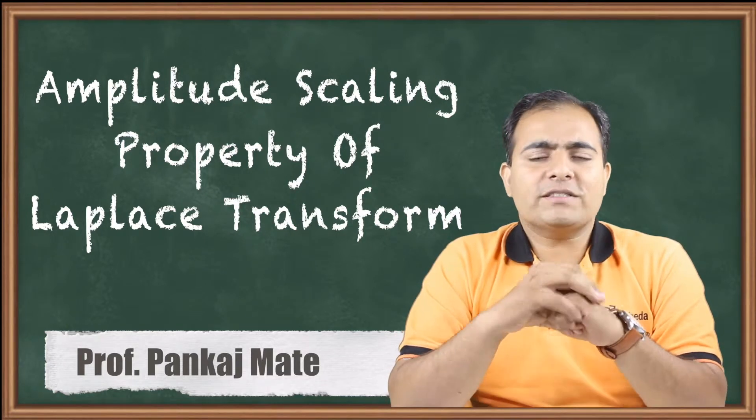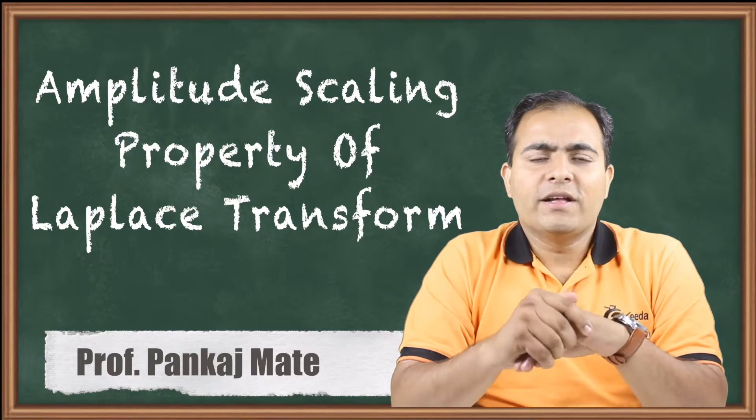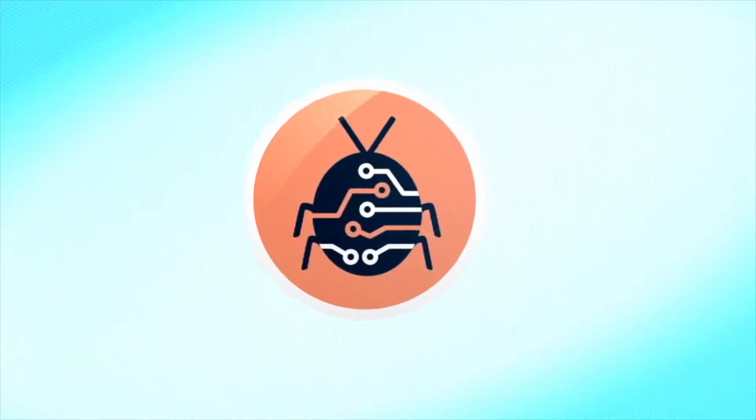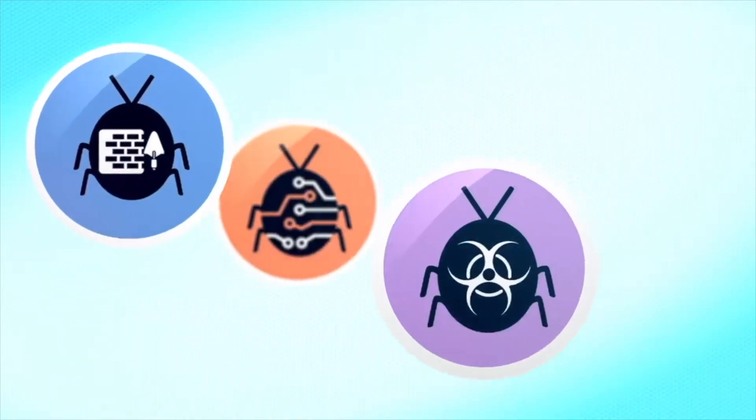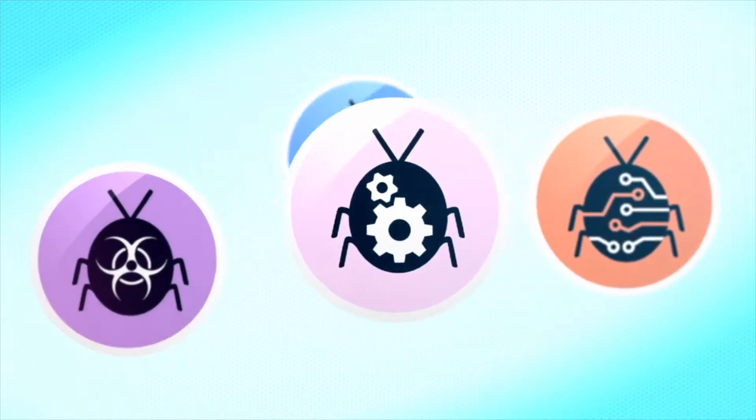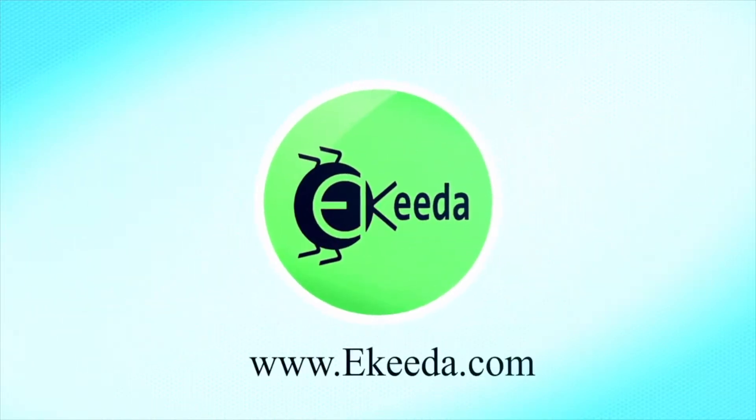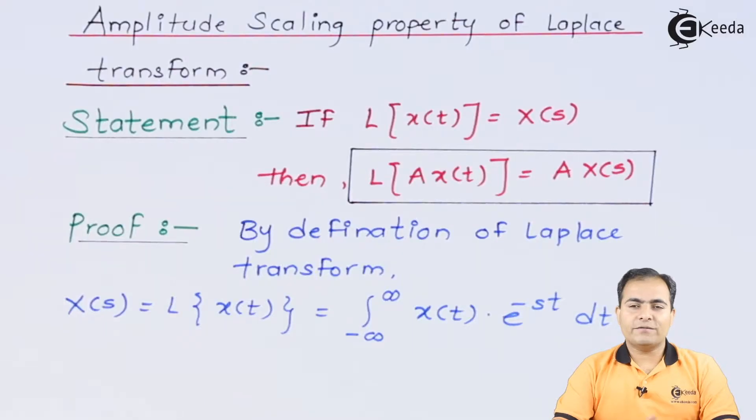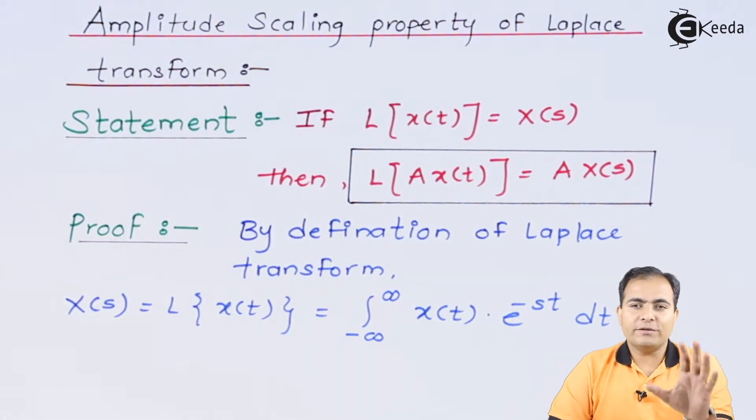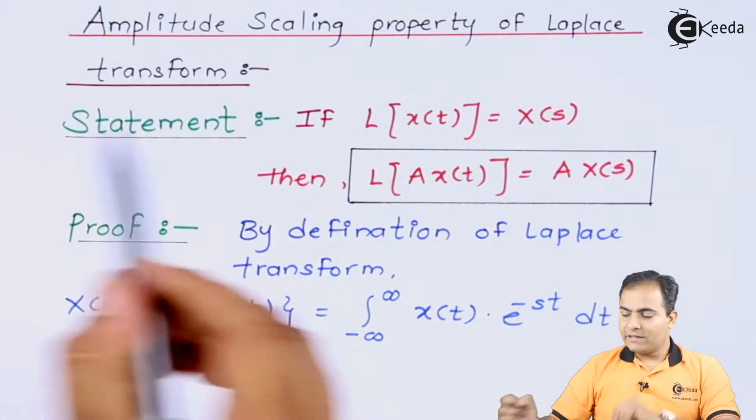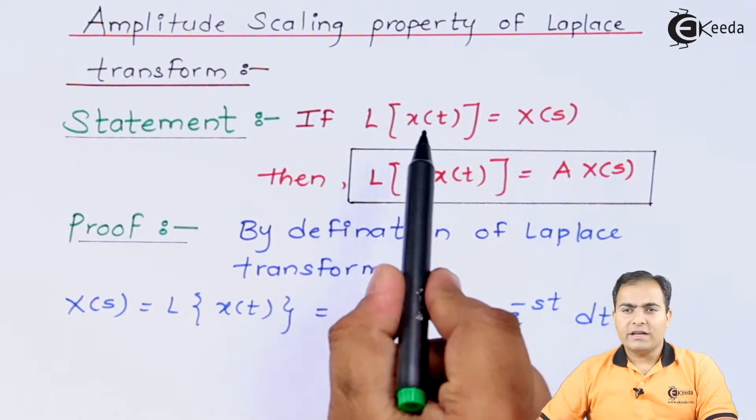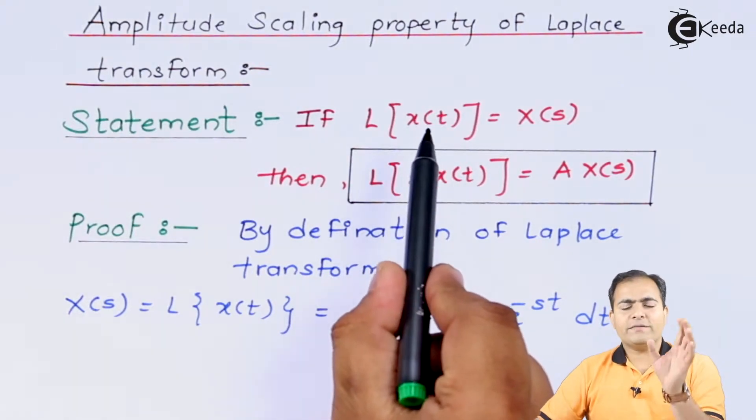So the first property of Laplace transform is amplitude scaling property. Let's see, first of all we will study the statement of amplitude scaling property. What is it? If we have a function x of t, then we can write this function as x of s.